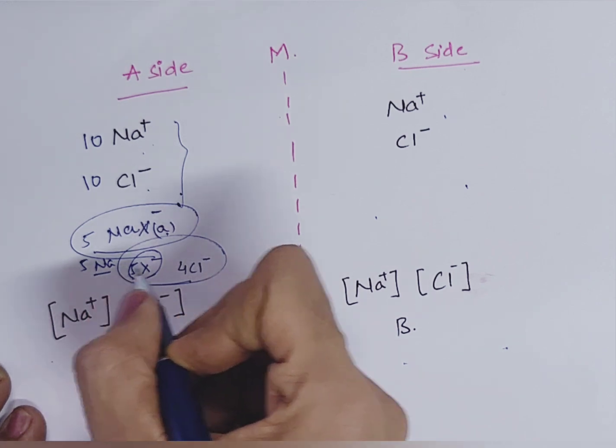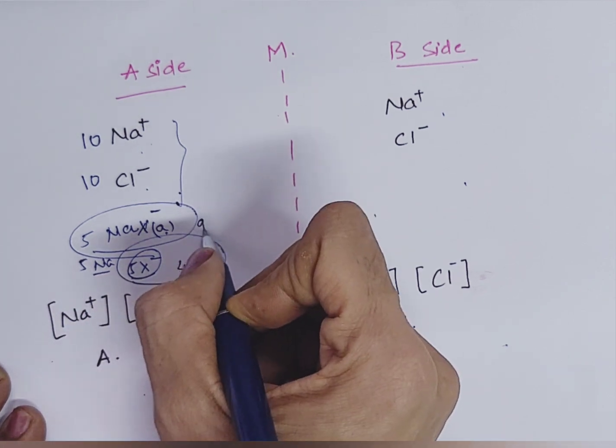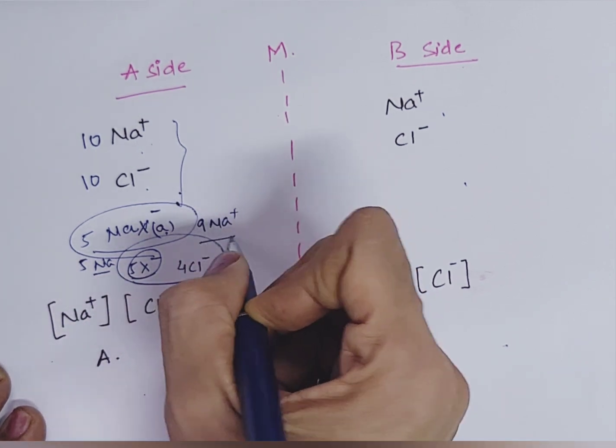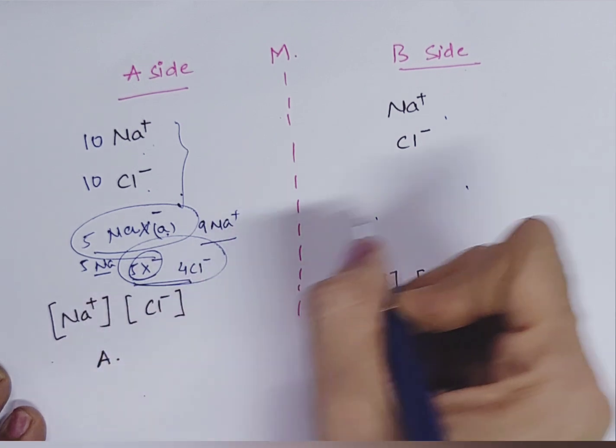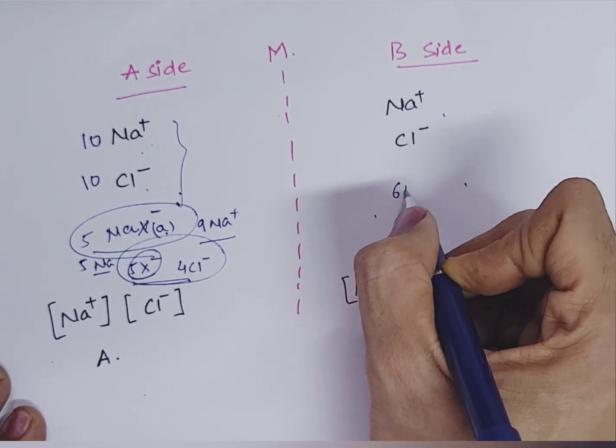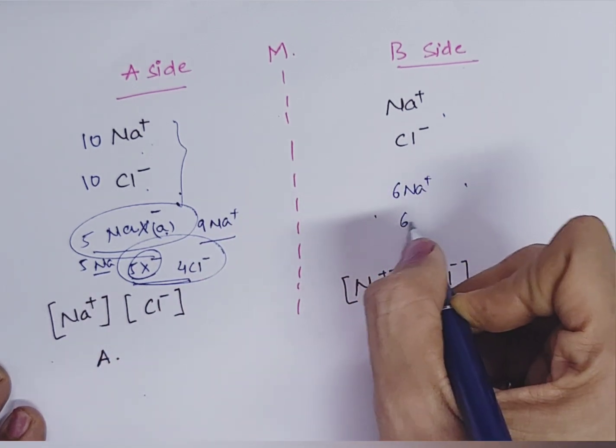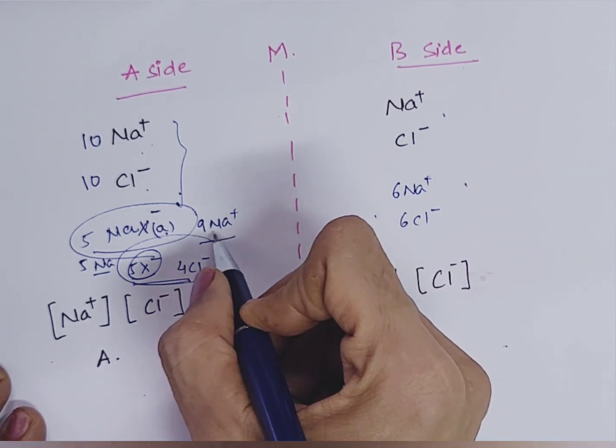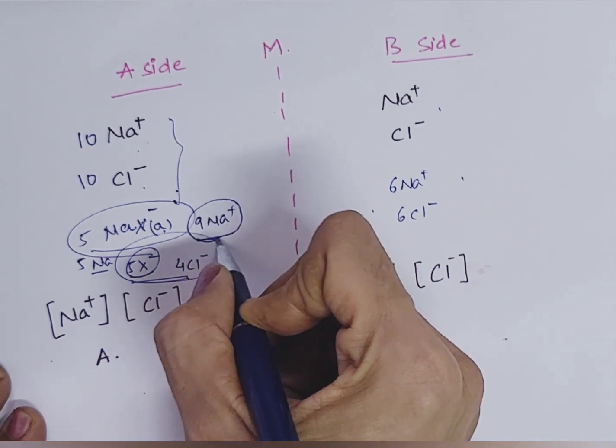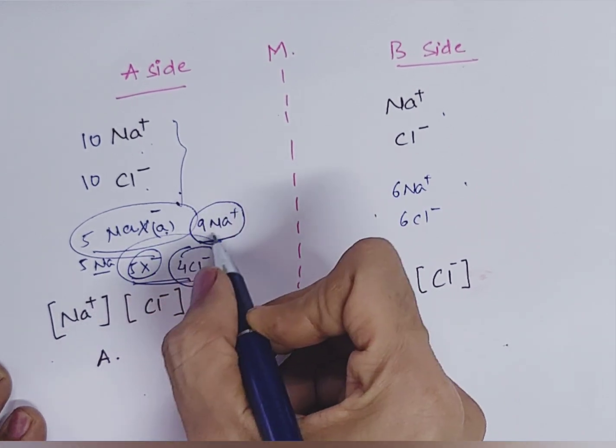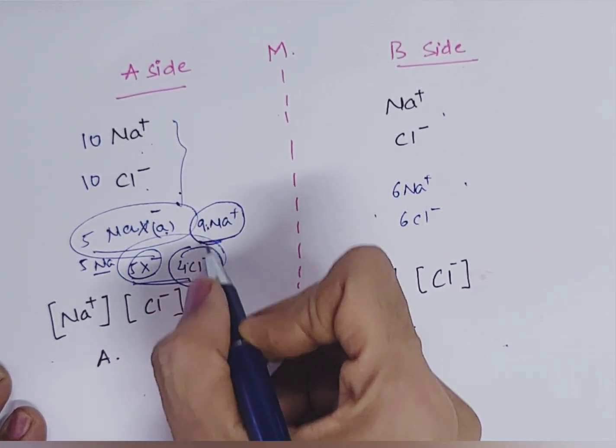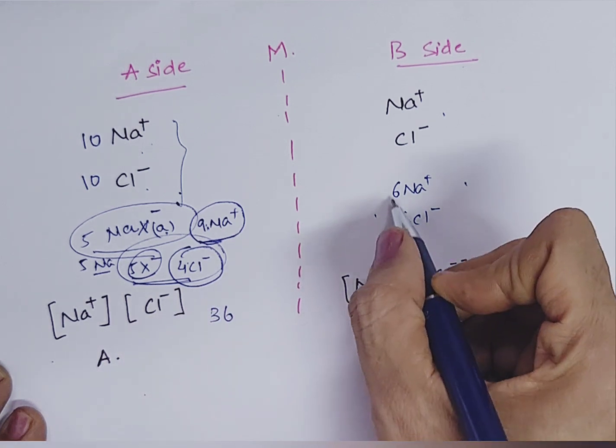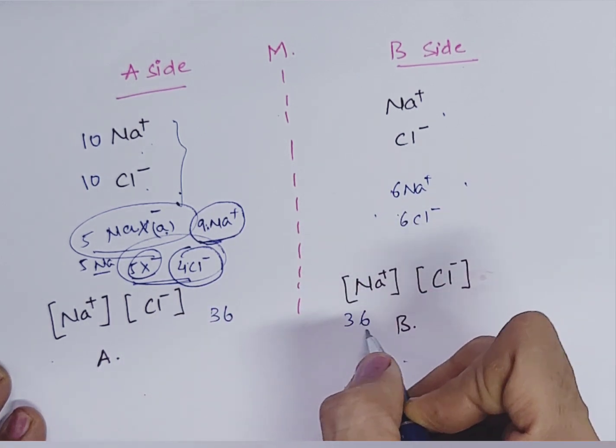And on the A side, 9 sodium ions, Na+ and 9 total. And on this side, we have 6 Na+ and 6 chloride minus. And this denotes that product of diffusible ions, you can see here. This diffusible anion and cation, this is the product. 9×4 is 36 is equal to 6×6 is 36. So this is Donnan equilibrium.